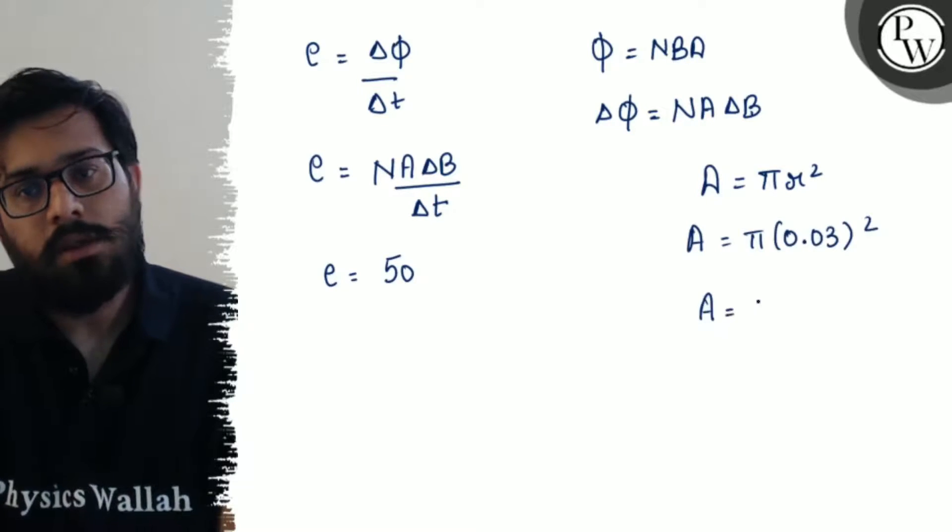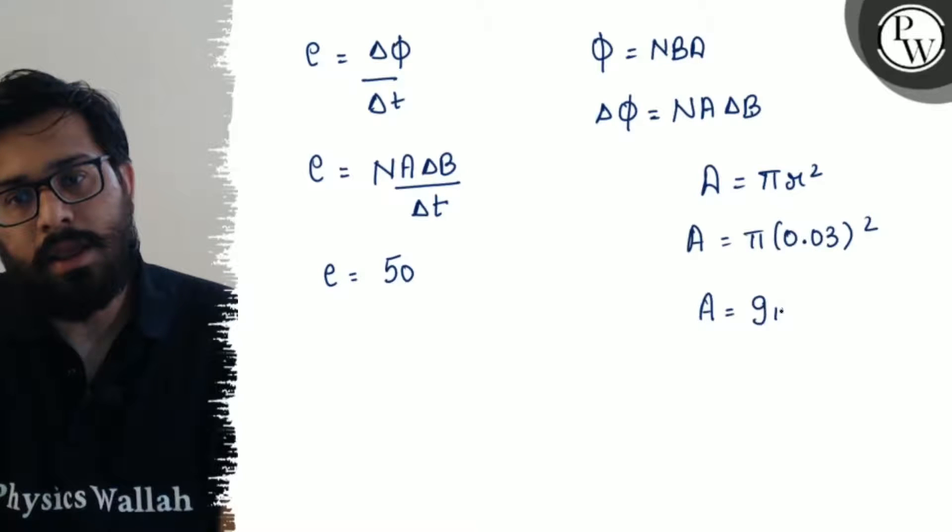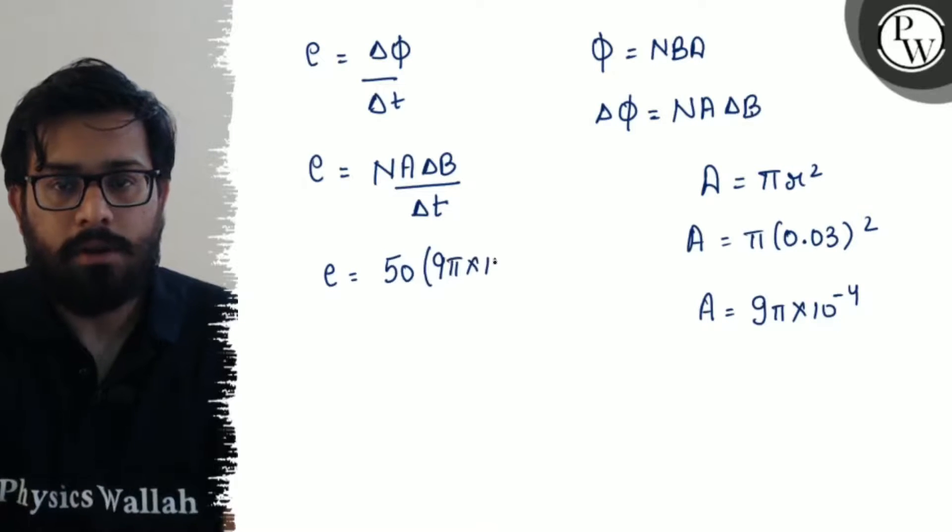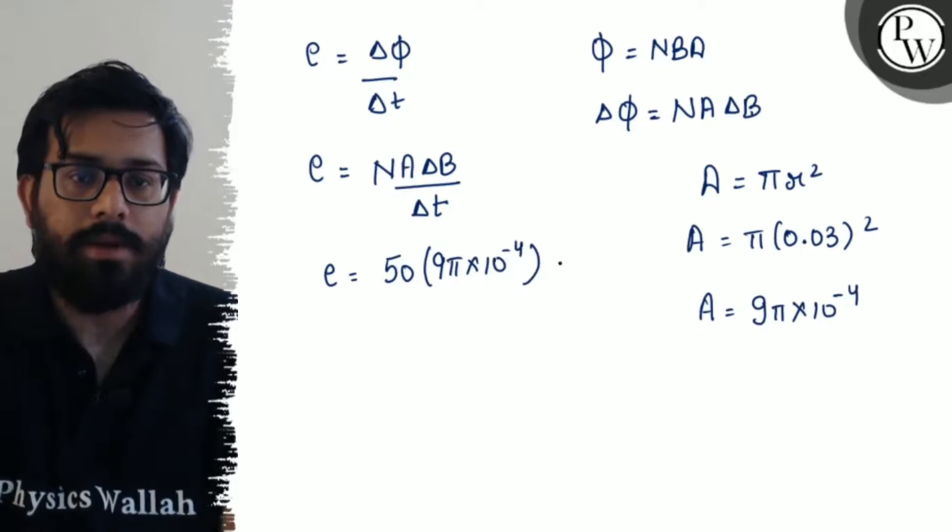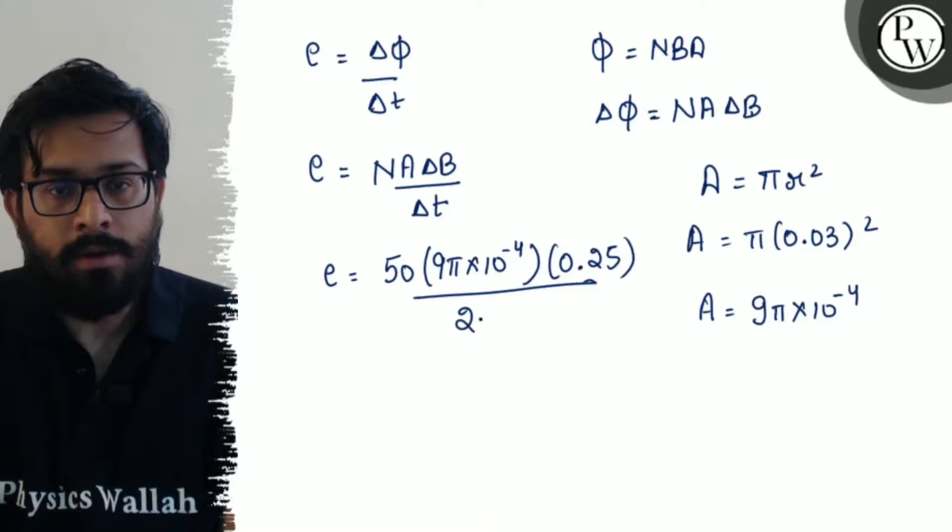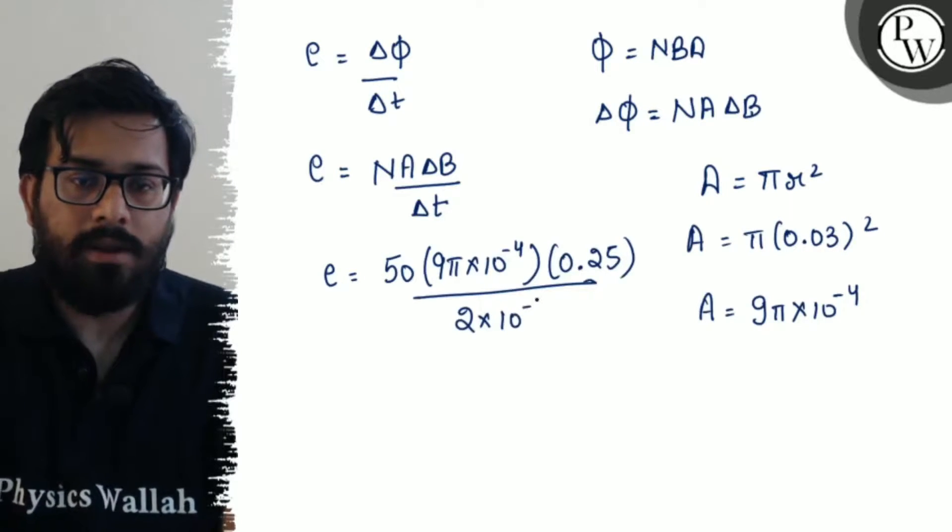The area can be written as pi times 0.03 squared, which equals 9 pi times 10 to the power minus 4. Put the values: 9 pi times 10 to the power minus 4 times delta B, which is 0.25, upon the time interval 2 times 10 to the power minus 3.